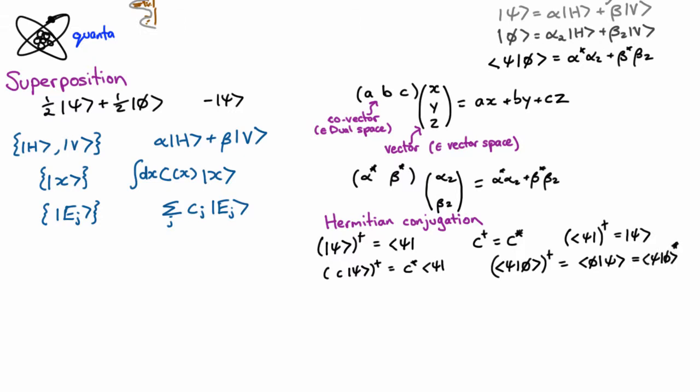One final comment about using bras and kets to do inner products. We often do things in terms of just the coefficients like we did in these matrix multiplications for Euclidean space and this matrix multiplication, but the coordinate basis version is not always the correct way to go, and you can always do things if you wish directly.